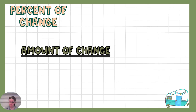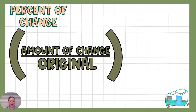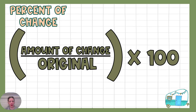We have a formula: it is the amount of change divided by the original amount, and that's going to give us a decimal. So we're going to multiply that by 100 to get our percent, because we know percent means out of 100.